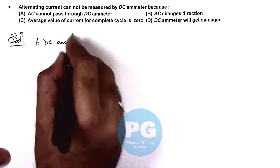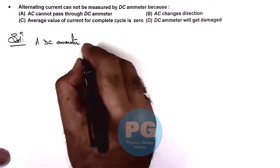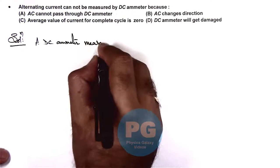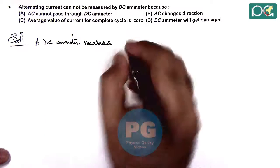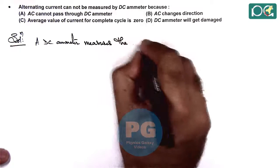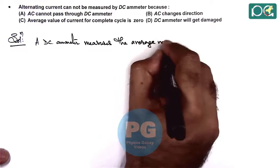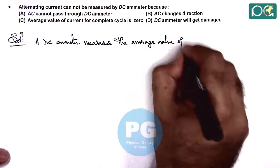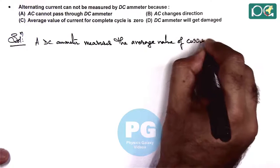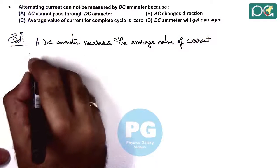A DC ammeter measures the average value of current passing through it.